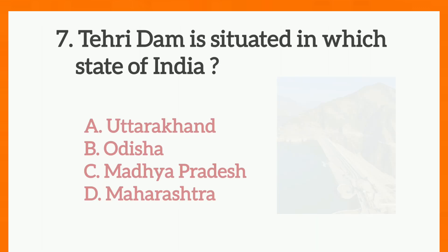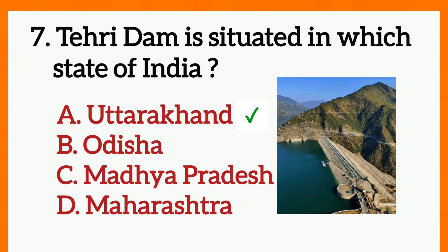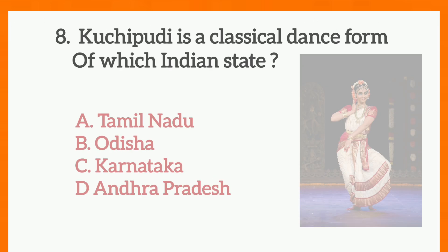Question number 7: Tehri Dam is situated in which state of India? Correct answer is A — Uttarakhand.